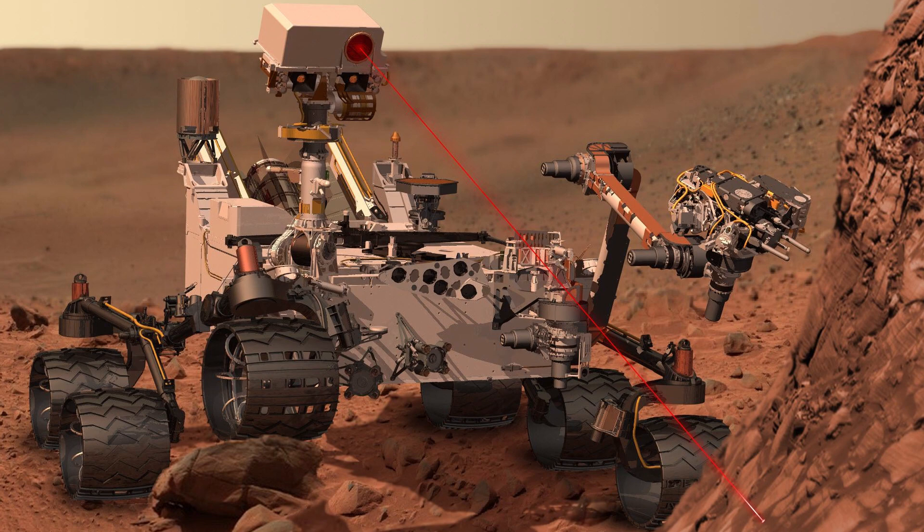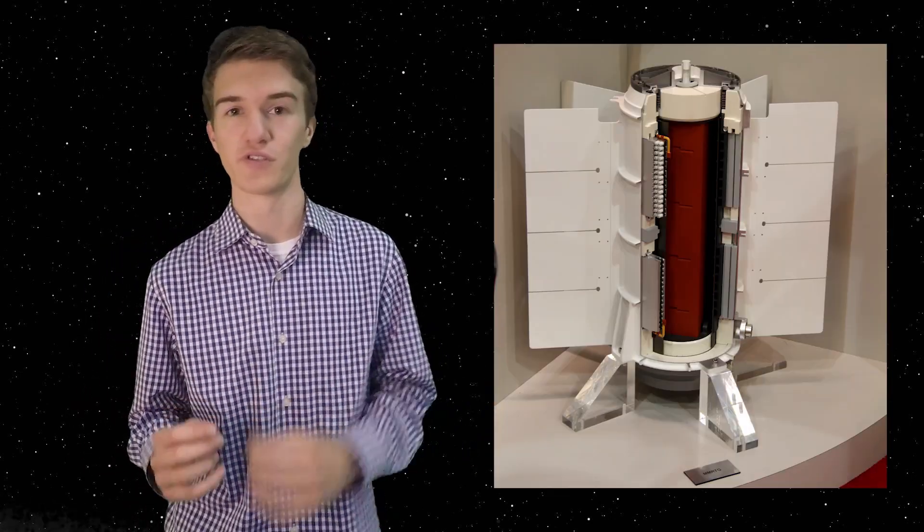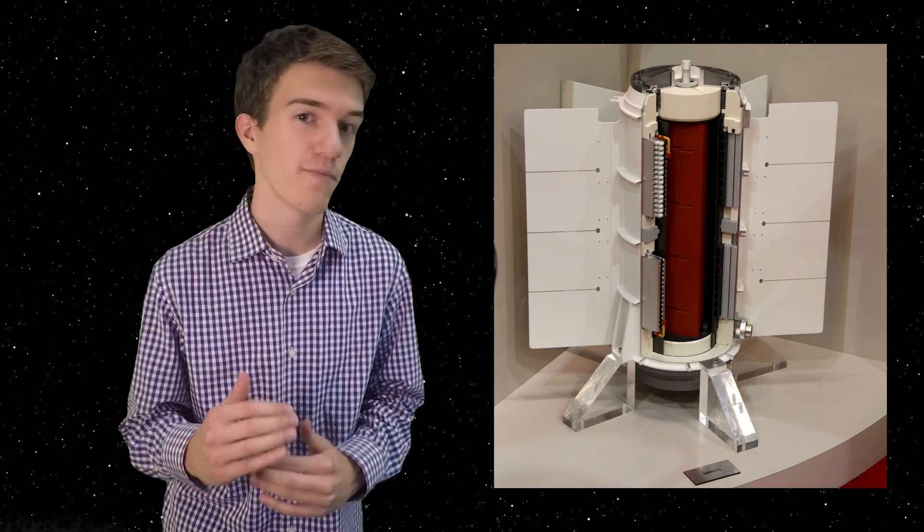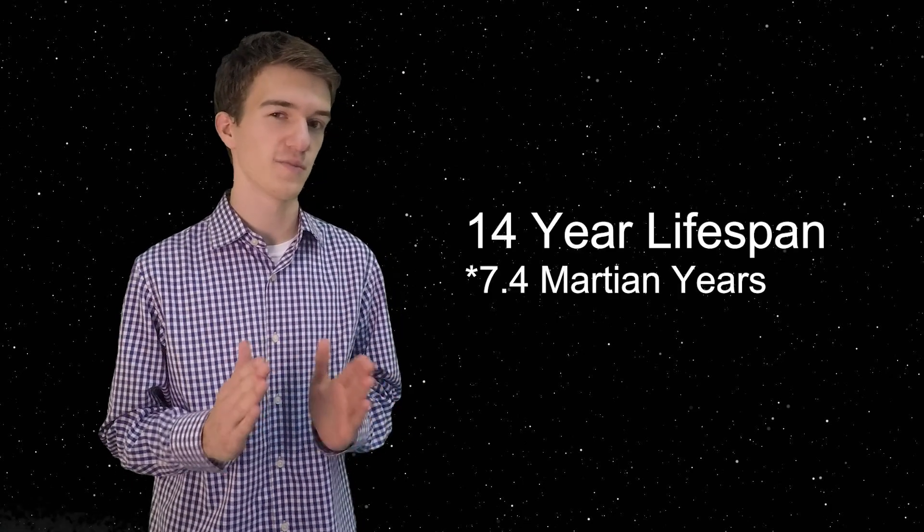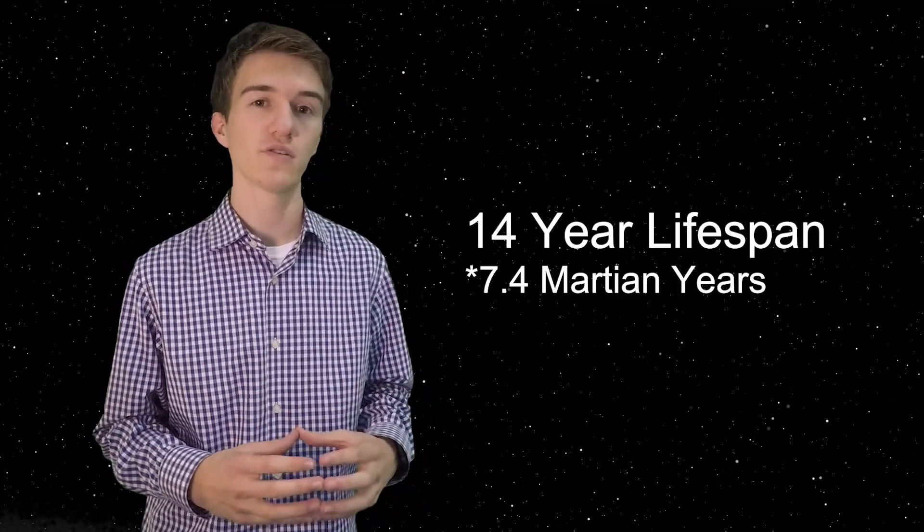So now that we get to current day Curiosity, what about the future? Curiosity is still trying to climb up Mount Sharp and understand the different elevations. However, how long can it run? Unlike Spirit and Opportunity, Curiosity runs off an RTG, radioisotope thermoelectric generator, which can only run for as long as the 10 pounds of plutonium inside of it can go. It's theorized that Curiosity has about a 14 year long lifespan, and since it's already been on Mars for five years, it has only about nine more years left.